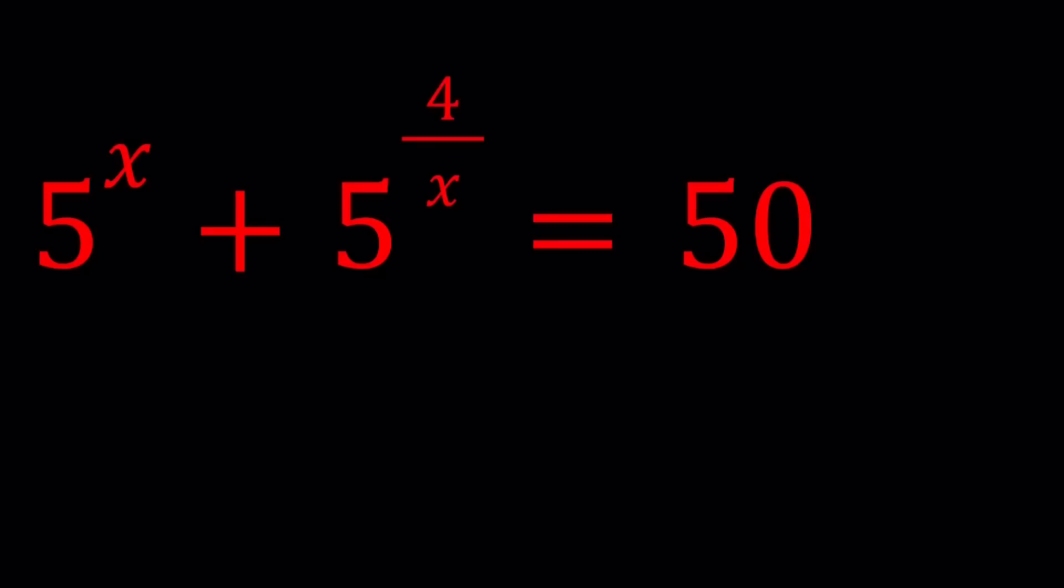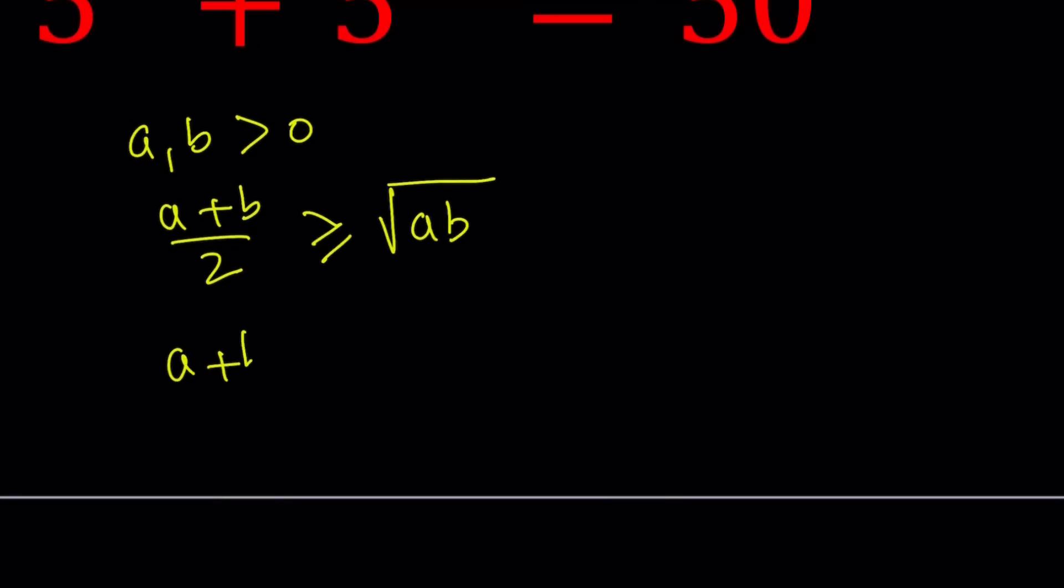If you have two numbers A and B that are positive, their arithmetic mean, which is half of their sum or their average, is always going to be greater than or equal to their geometric mean, which is the square root of their product. Obviously this is just for two numbers. If you have three numbers, their geometric mean is the cube root of the product.